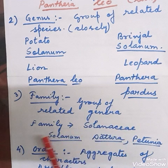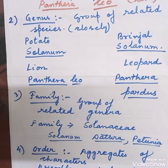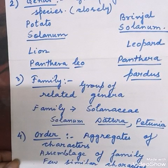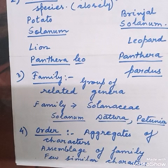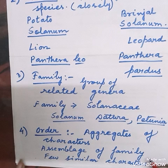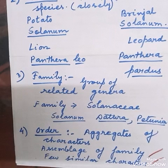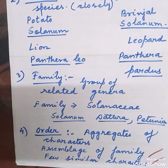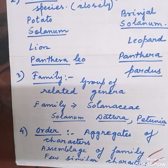Next is order. When making an order, the aggregate of characteristic features is considered — all characteristic features are brought together. Order is an assemblage of families with a few similar characteristic features. So many similar species form a genus, many genera form a family, and many families assemble together to form an order with a few similar characteristic features.